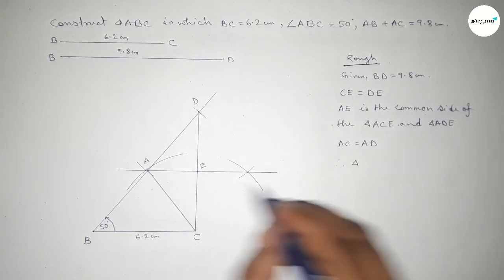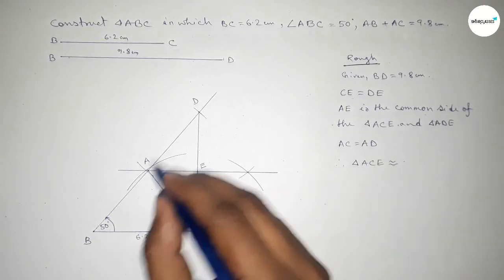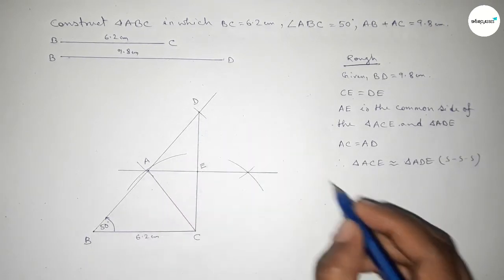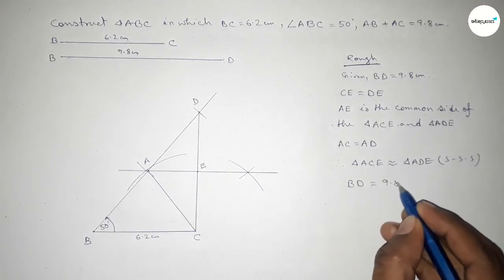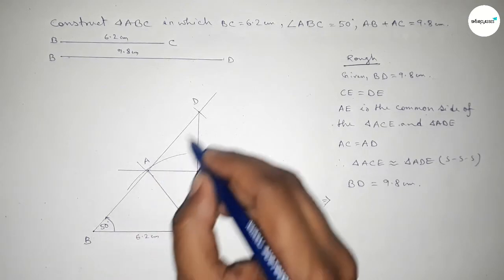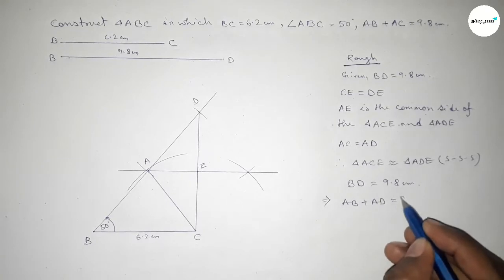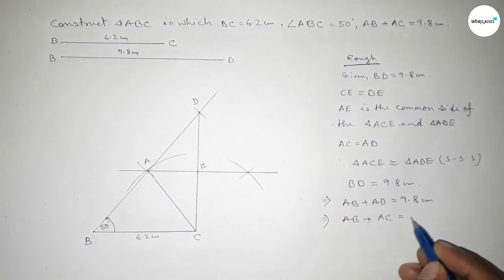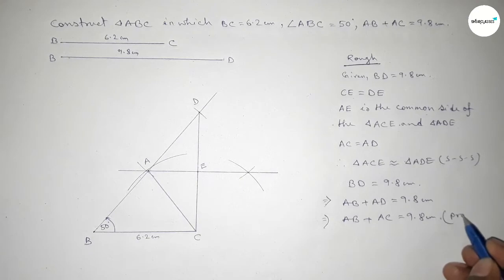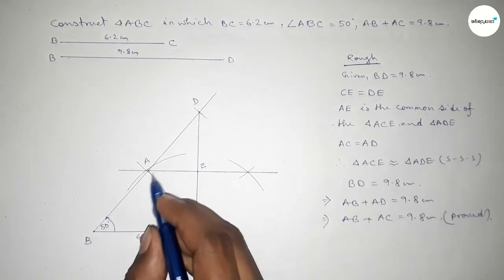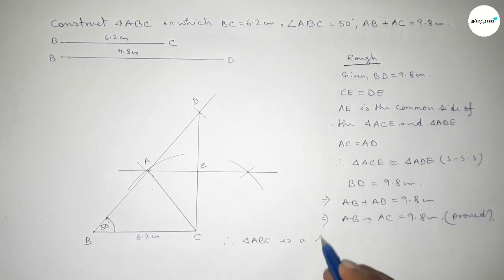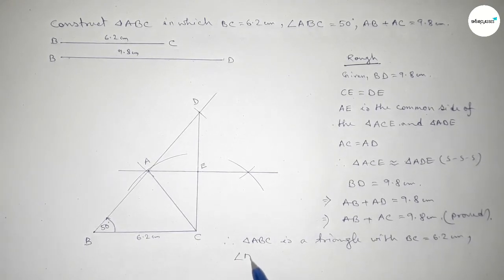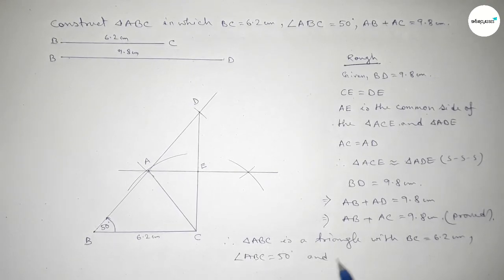Triangle ACE is similar to triangle ADE by side-side-side. Now we can write BD equals 9.8 centimeters, which implies BD can be written as two segments: AB plus AD equals 9.8 centimeters. Since AD equals AC, we get AB plus AC equals 9.8 centimeters. Therefore, triangle ABC is the required triangle in which BC equals 6.2 cm, angle ABC equals 50 degrees, and AB plus AC equals 9.8 centimeters.